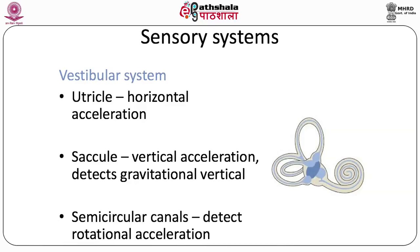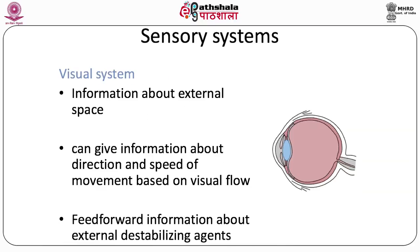There are three semicircular canals in each inner ear, each arranged to sense three degrees of freedom in rotation. One is in the horizontal plane, sensitive to accelerations and rotations in that plane; one is in the vertical plane, sensitive to displacements and accelerations in that plane; and one is in a perpendicular plane. All three are mutually perpendicular, covering all potential degrees of freedom of rotation.